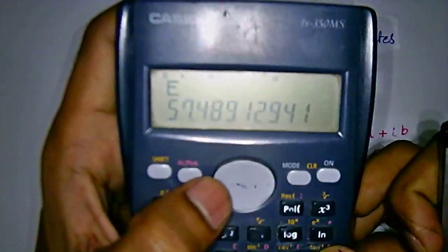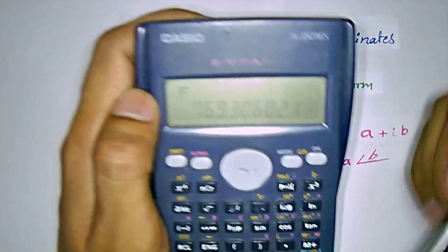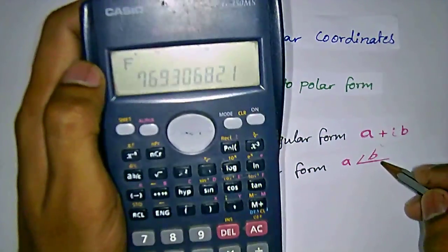And again alpha and F will give the angle of the polar form, which we should write here.